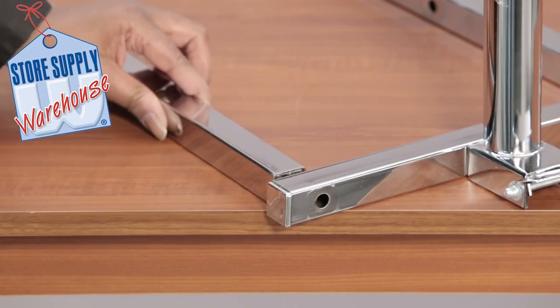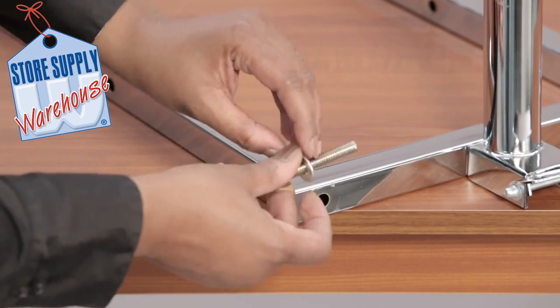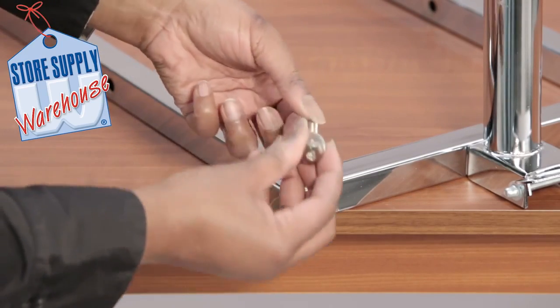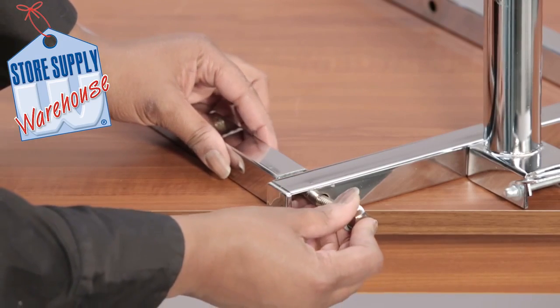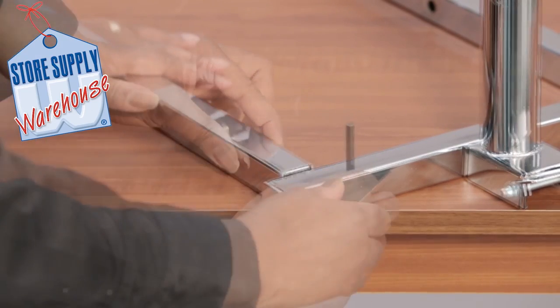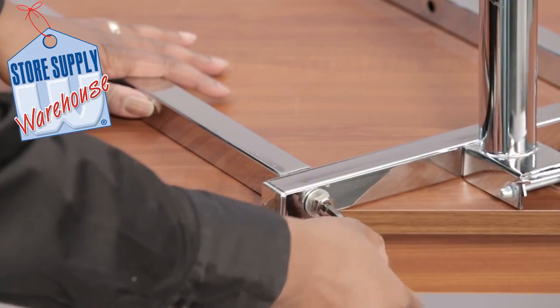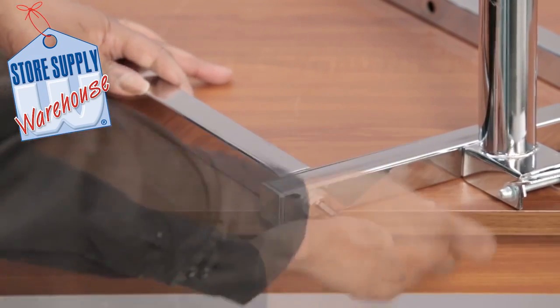Turn the unit right side up. Insert a bolt and washer into the side of the base. Attach the outside base bar and tighten down with an allen wrench provided.